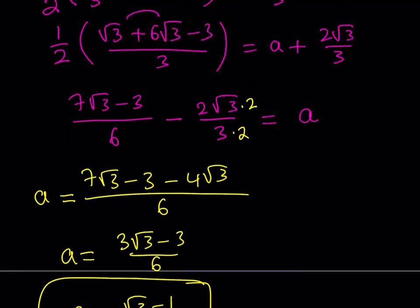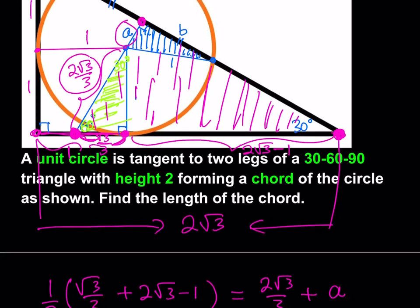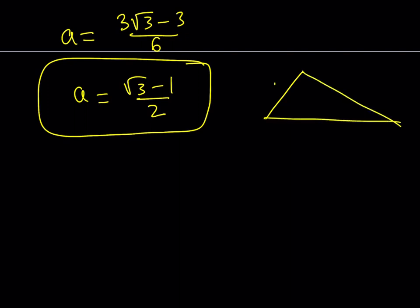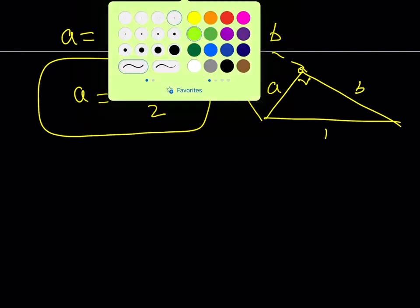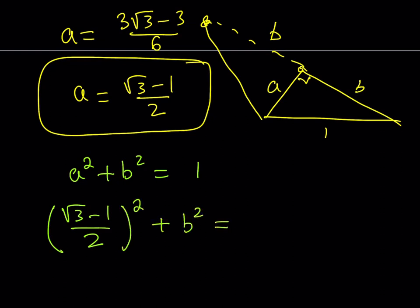Now why do I need the A value? Because I have a right triangle whose height is A, base is B, and hypotenuse is 1. B is half the chord, so when I double it I get the length I'm looking for — 2B is the answer. Using the Pythagorean theorem: A² + B² = 1. We know A = (√3 − 1)/2, so that quantity squared plus B² equals 1.